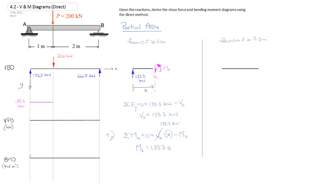I can go ahead and draw that in on my bending moment diagram. It looks something like that. And label the diagram with the equation m at x is equal to 133.3 x.